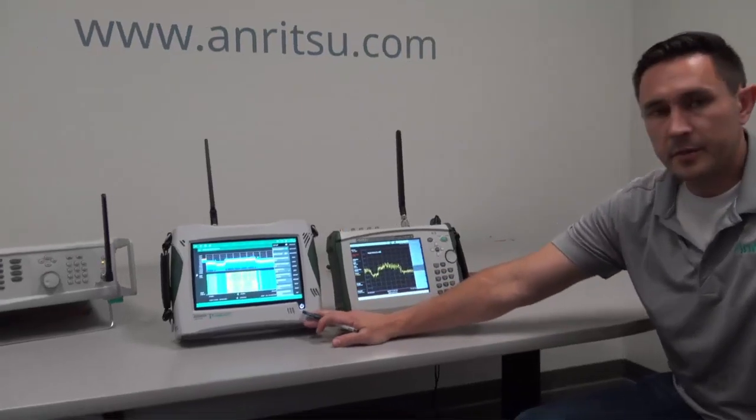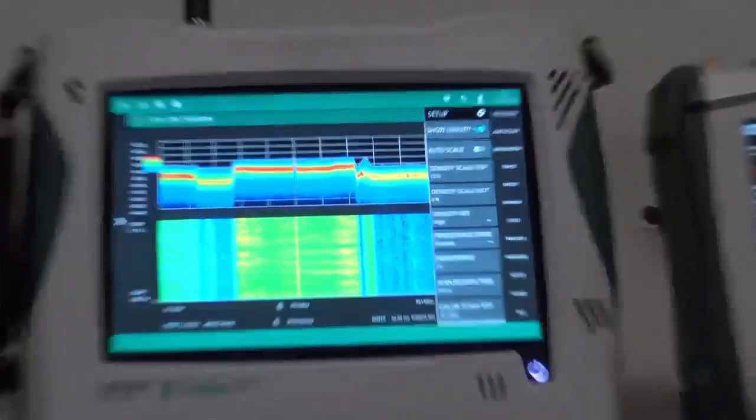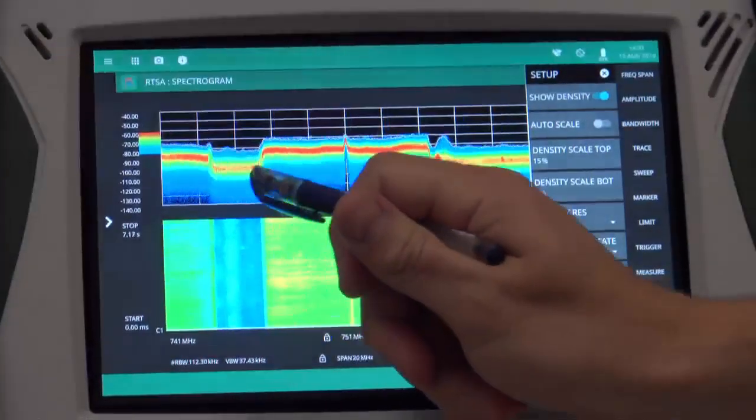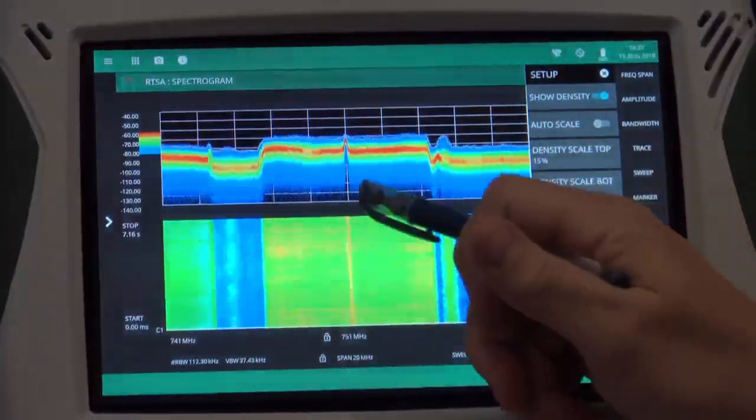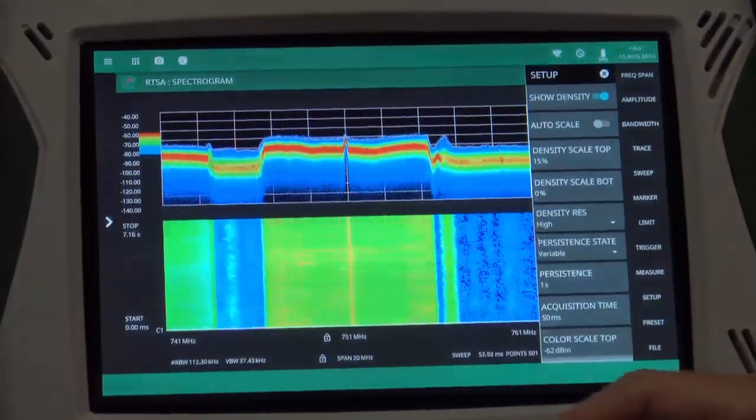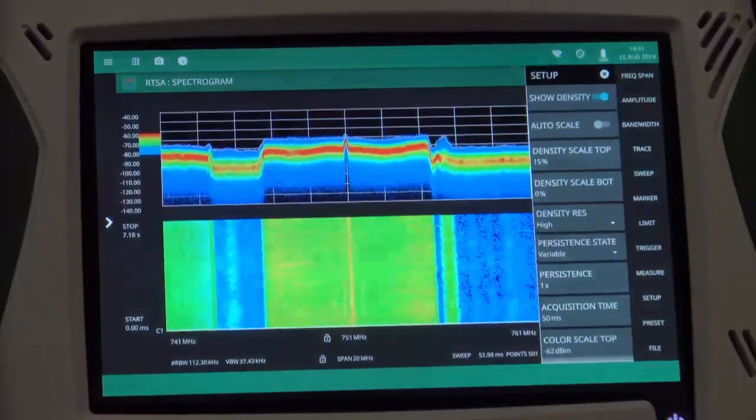If I look over at my real-time spectrum analyzer, my density display actually gives me a lot more information about what's happening underneath that signal. I can see here that I have my LTE signal with lots of power, but there's something going on in the middle. I have a CW signal that's jamming part of the LTE signal and interfering with the data that's happening there.